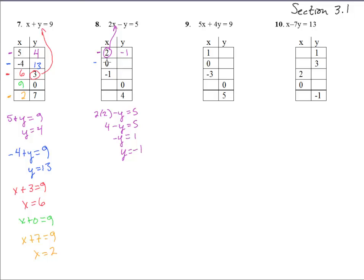Now let's stick in 0. If we stick in 0, we get 0 minus y equals 5. Well, 0 doesn't count there. That's nice, so just y equals a negative 5. Multiply or divide both sides by a negative 1, we get a negative 5. That's kind of a nice one.